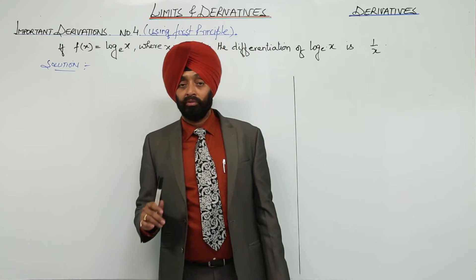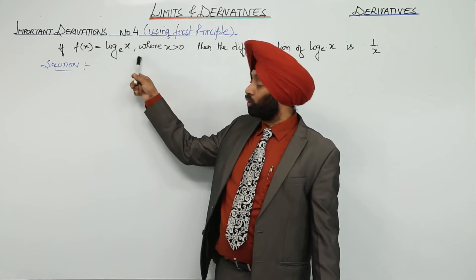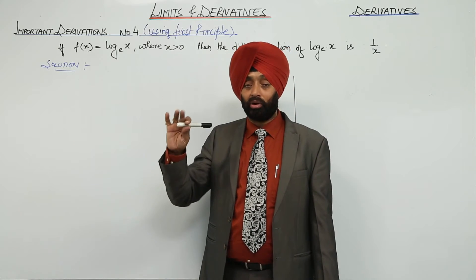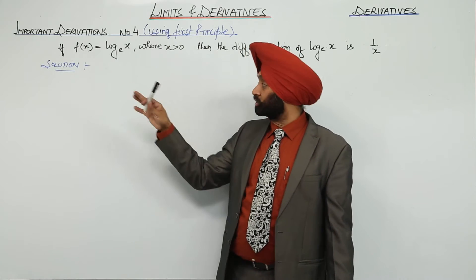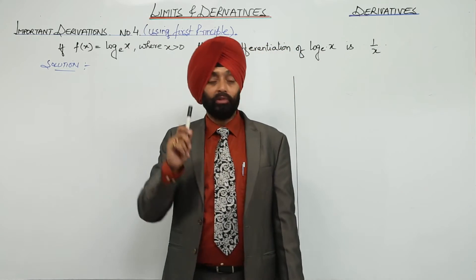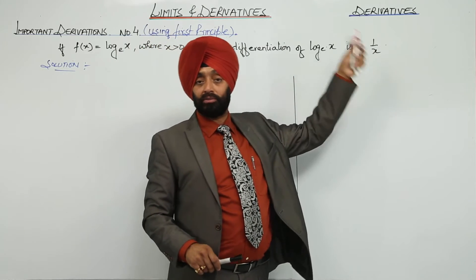Now, fourth formula is what will be the derivative for log x? And for log x, directly in the question we are writing log x. But basic thing is we have to write log base e times x. So, derivative for log e times x is what? 1 by x. Let's derive it.